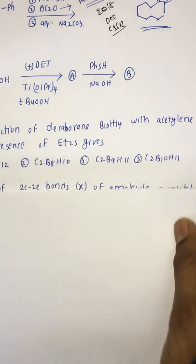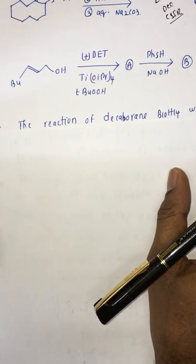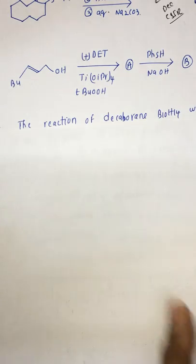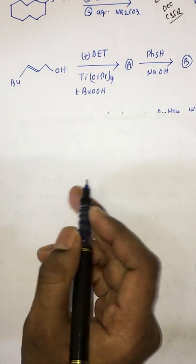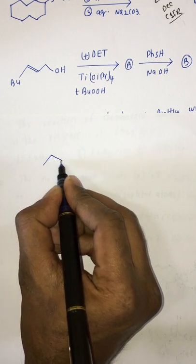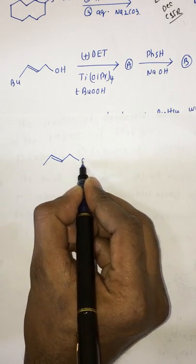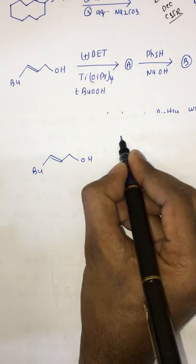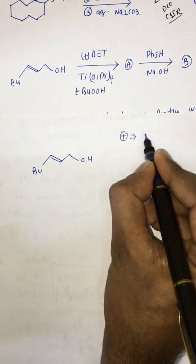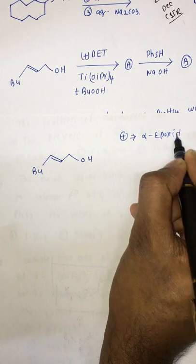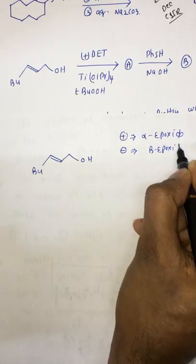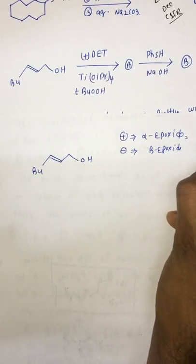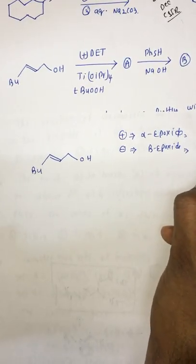Next we have an allyl alcohol — this is Sharpless asymmetric synthesis. I have made videos on the Sharpless reaction, so you can refer to those. When we have plus D-ET, we get the alpha epoxide. When we have minus D-ET, we get the beta epoxide. Alpha epoxide means below the plane; beta epoxide means above the plane.